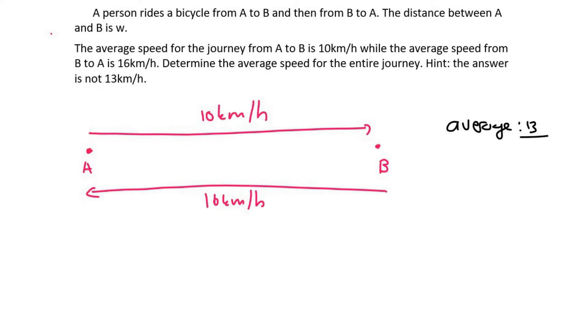It turns out that that is not true, and the reason is the following. I want you to think about this carefully. Which of the speeds, 10 or 16, will the person cycling spend more time doing? Would they spend more time at the 10 kilometers per hour speed, or would they spend more time at the 16 kilometers per hour speed?